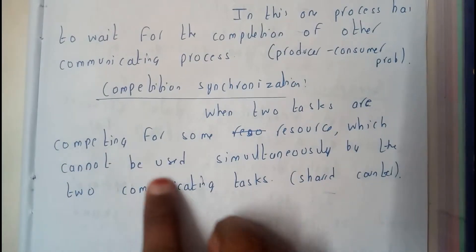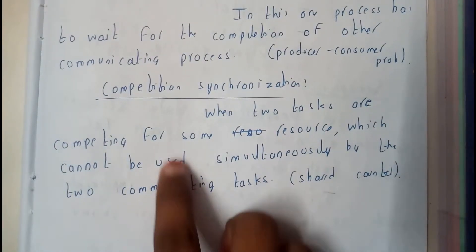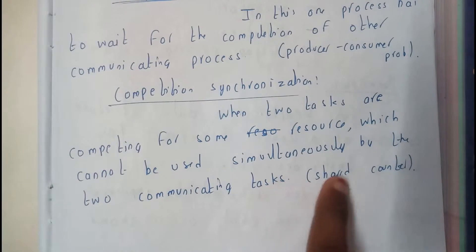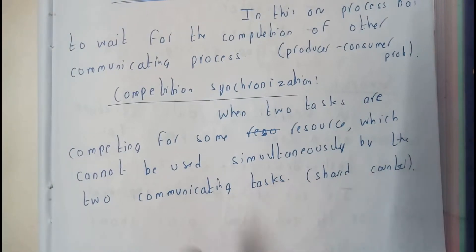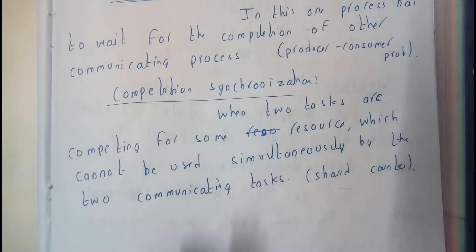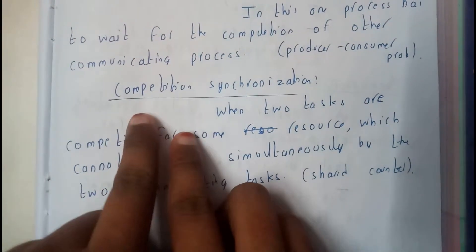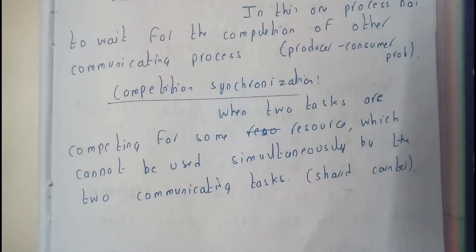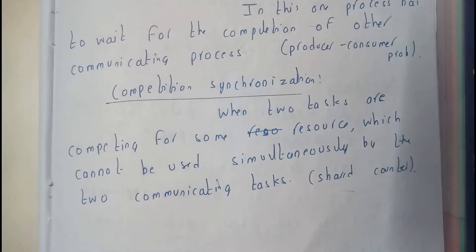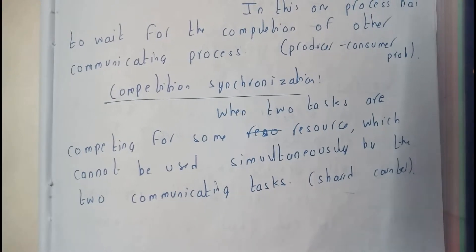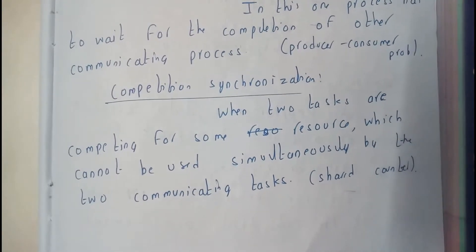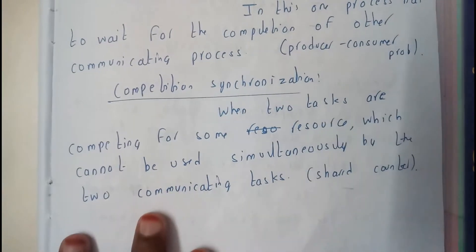The second type is competition synchronization, where two tasks are competing for a resource that cannot be used simultaneously by both. In this case, they will be competing and only one will have access in the end.